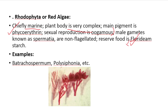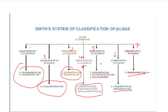This is Smith's classification of algae. He divided algae into seven divisions: Chlorophyta, Euglenophyta, Pyrophyta, Chrysophyta, Phaeophyta, Cyanophyta, and Rhodophyta.